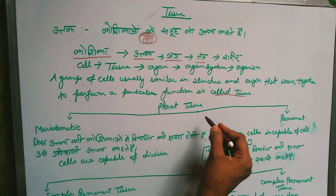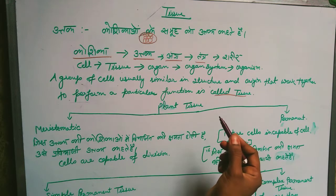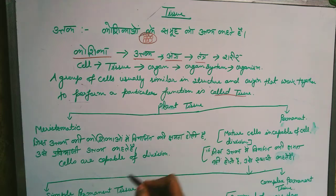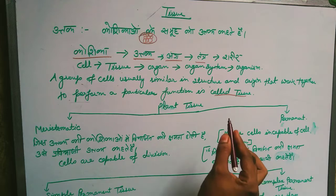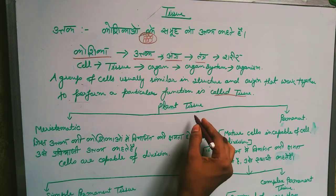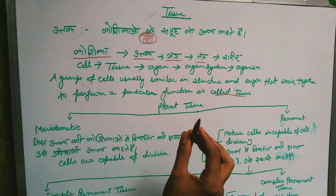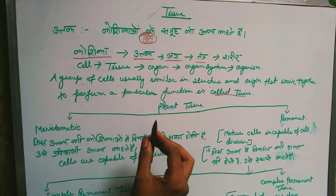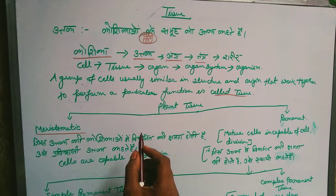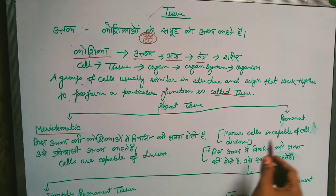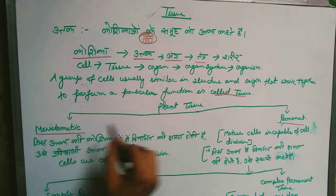We will know only about PADAP Uttak, which means Plant Tissue. In the next video, we will know about Animal Tissues. Plant tissue is mainly of two types: Meristematic Tissues and Permanent Tissues. Plant tissue is also called PADAP Uttak.